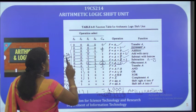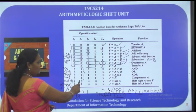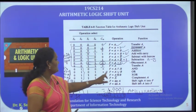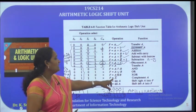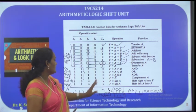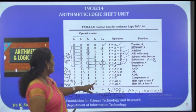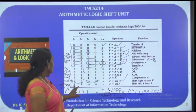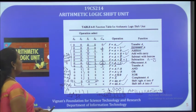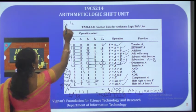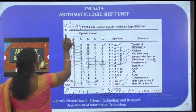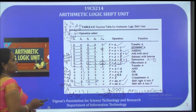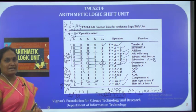When S3, S2 are 0, 1, logic operations are performed. With S1, S0 = 0, 0: AND operation; 0, 1: OR operation; 1, 0: XOR operation; 1, 1: complement of A. When S3, S2 are 1, 0, right shift of A occurs. When S3, S2 are 1, 1, left shift of A occurs. This functional table fully describes the arithmetic logic shift unit's behavior.